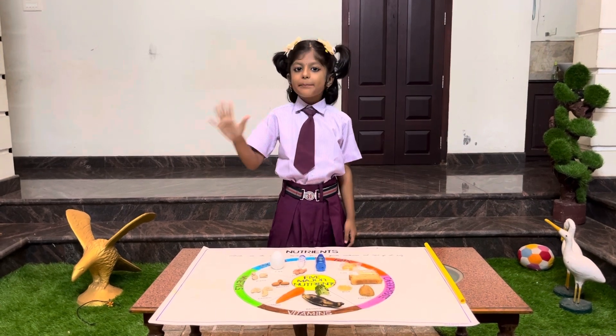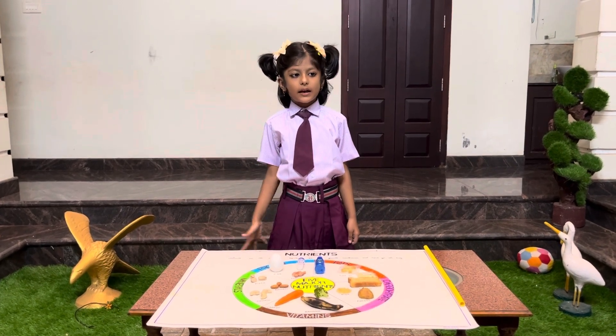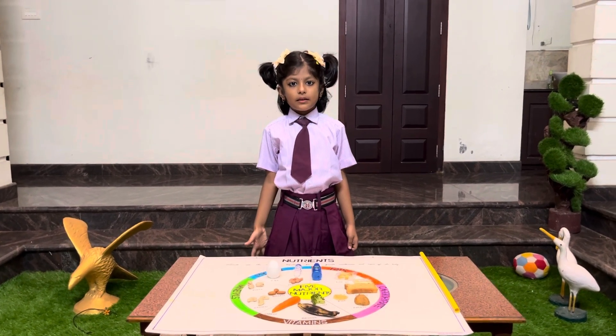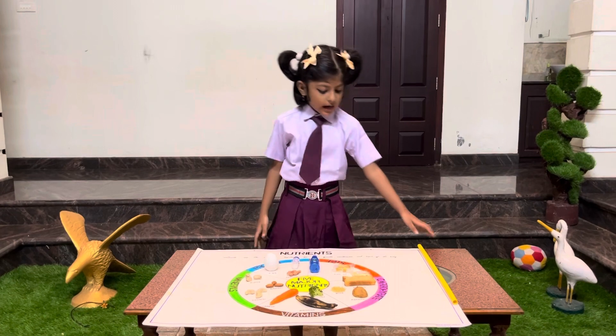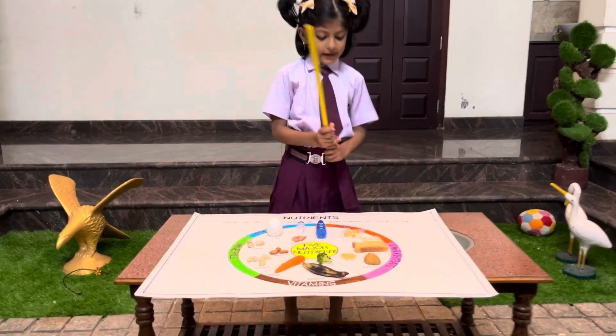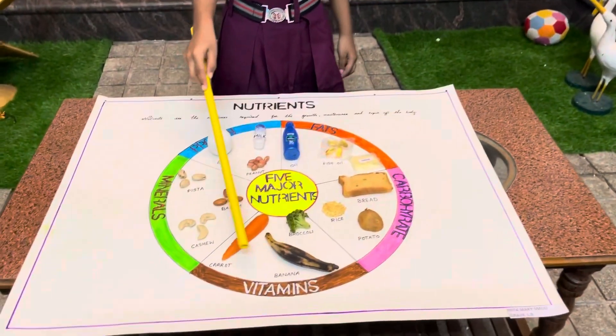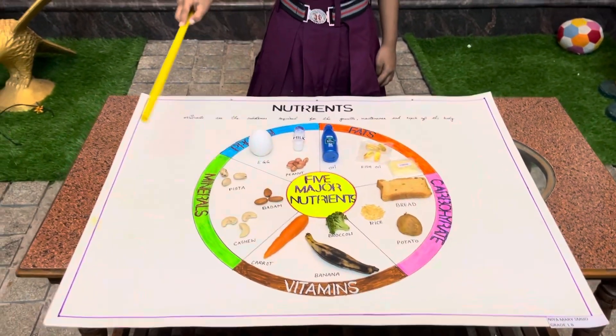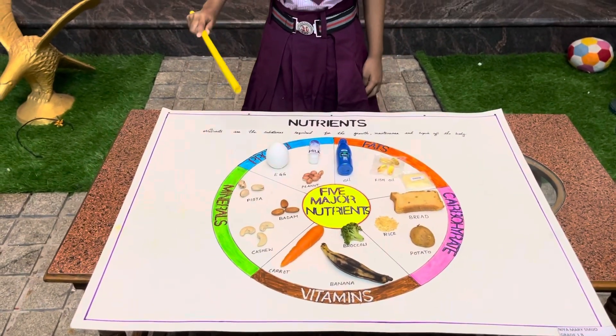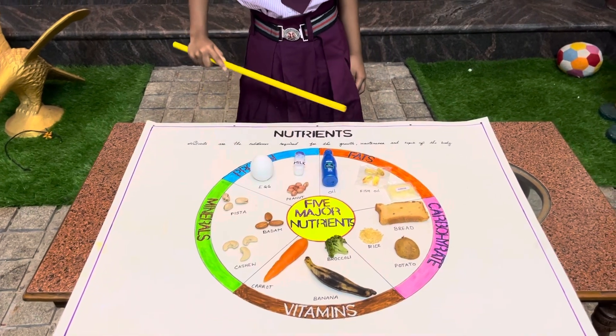There are 5 major nutrients. They are carbohydrates, vitamins, minerals, protein, and fats.